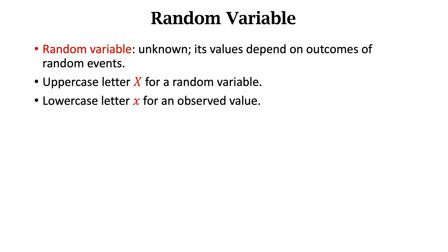People typically use uppercase letters for random variables and lowercase for observed values. What is the difference between a random variable and its observed value? The random variable, big X, denotes the unknown outcome. It has randomness.